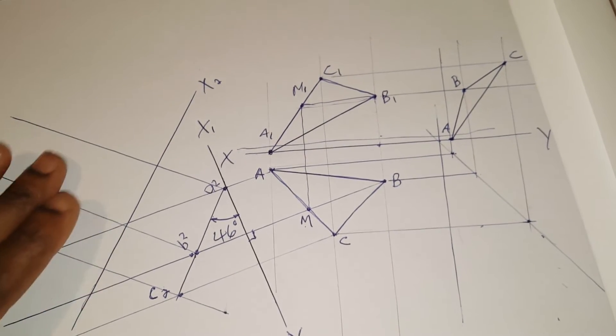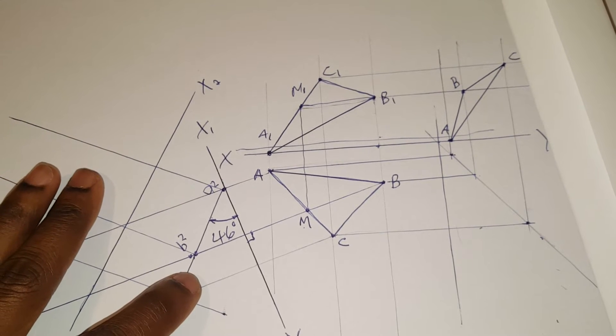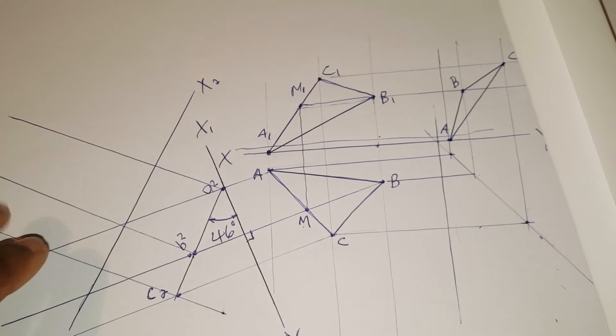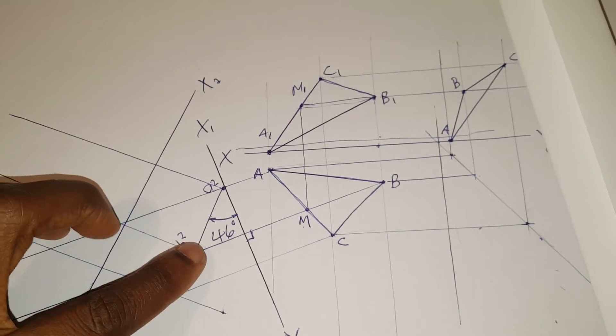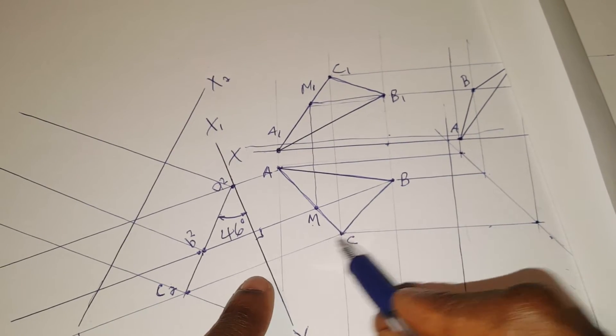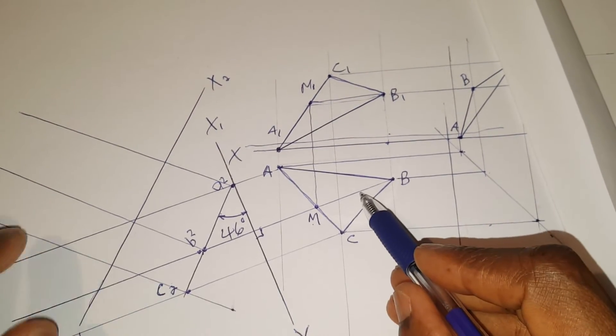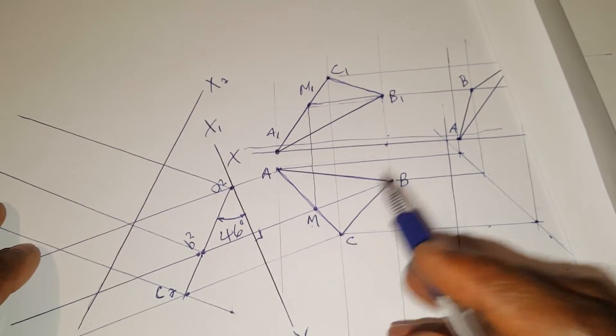The rule states that the face that you're working on, you step back 2 views to get your measurement. So I'm working on X2 Y2, so I then step back 1, 2 view. So I will use these measurements. I'll transfer these measurements to X2 Y2 lines.